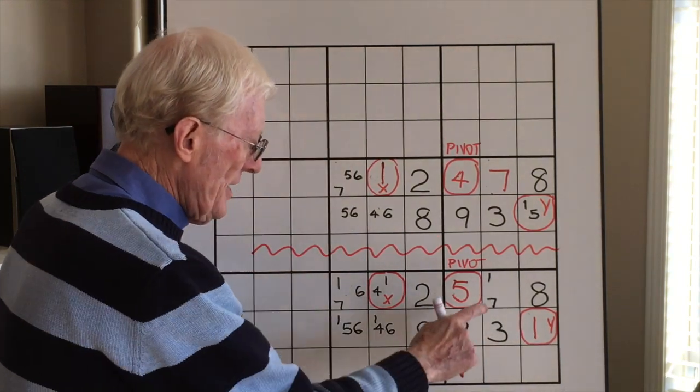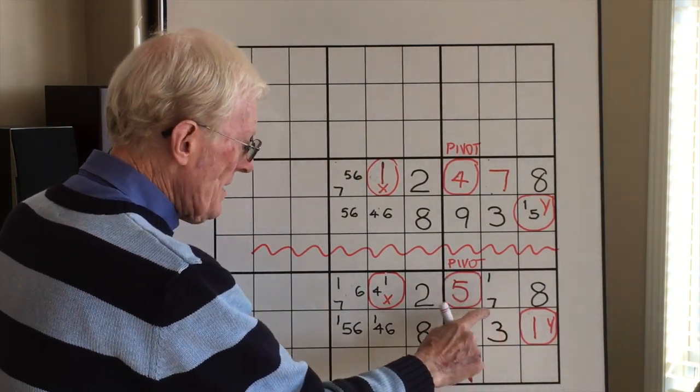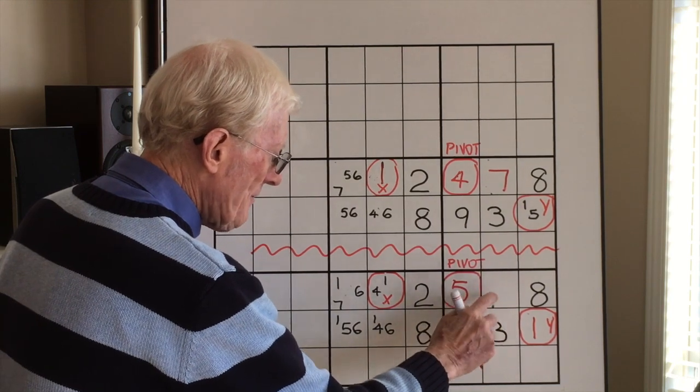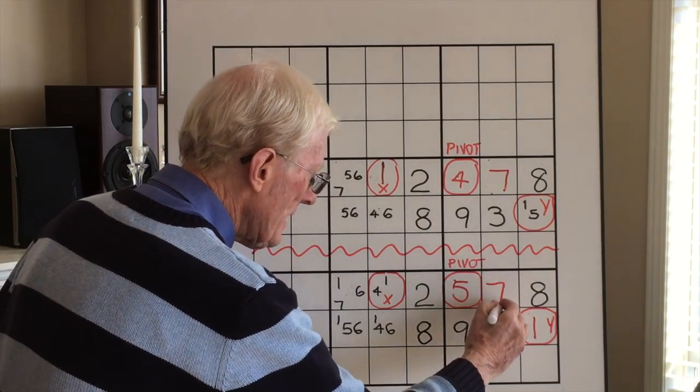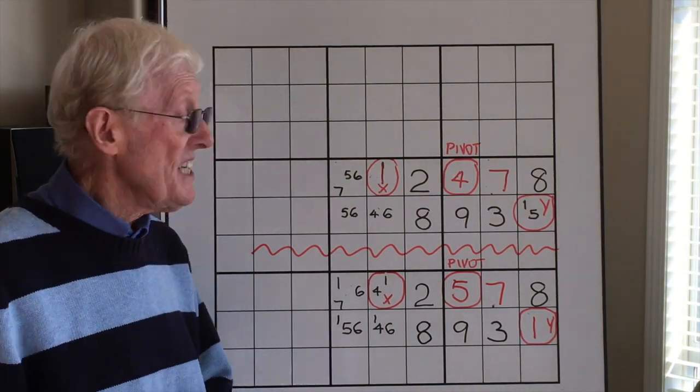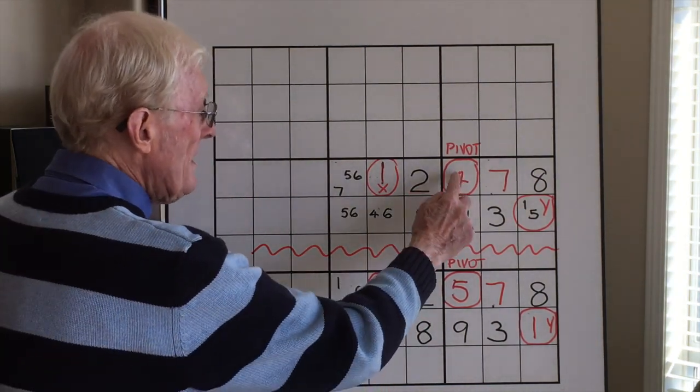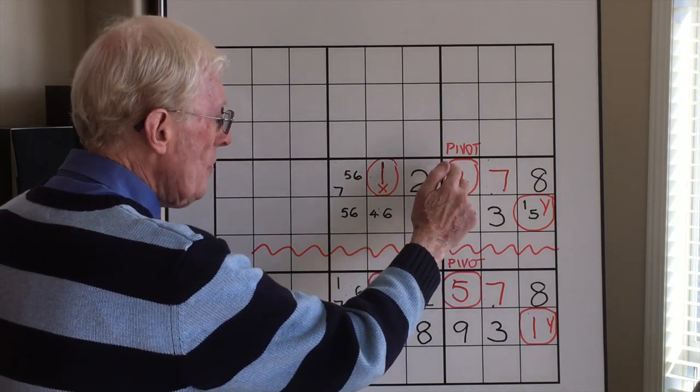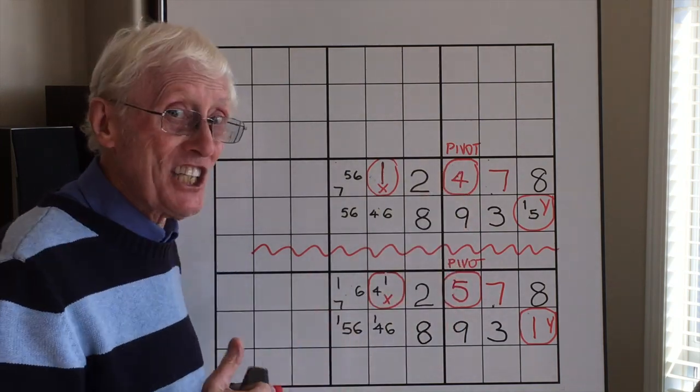Now if that's a one, therefore this cell here can lose that one and this becomes a seven. So what we're trying to say here, the neat thing about the XY-wing is that whichever one number, whether it was a four or a five, in each case that becomes a seven.